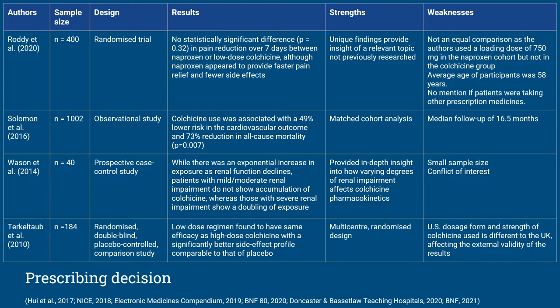Solomon and colleagues in 2016 compared new users of colchicine with an equal number of non-users and followed both groups for cardiovascular events. The findings revealed that colchicine use is associated with a 49% lower risk in cardiovascular outcomes and 73% reduction in all-cause mortality. A strength is that both groups were matched for age and gender and adjusted for potential confounders. However, as an observational study, it is limited by non-random assignment and subject to bias, as colchicine may have been preferentially prescribed to patients more willing to use medications like statins or antihypertensives. Walson and colleagues found that patients with mild-to-moderate renal impairment do not show accumulation of colchicine, in line with BNF recommendations that dose reduction is not necessary for mild or moderate renal impairment. However, this study was inherently weak by its small sample size and pharmaceutical company sponsorship.